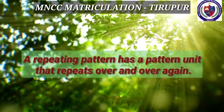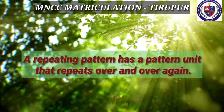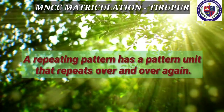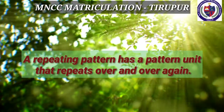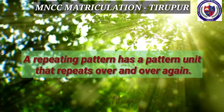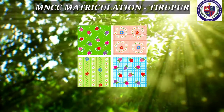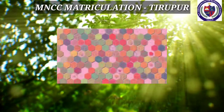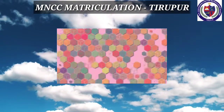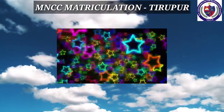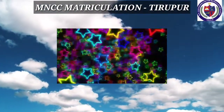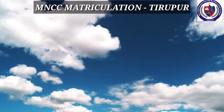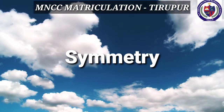Let us learn our next topic: repeated pattern. A repeated pattern is a pattern unit — a group of objects that may occur repeatedly over and over again. See the given picture: strawberry, flowers, cube, stars — these objects occurring repeatedly is called a repeated pattern.